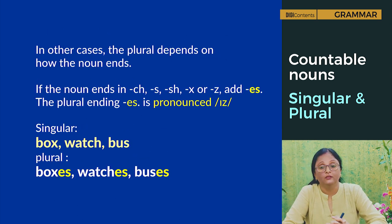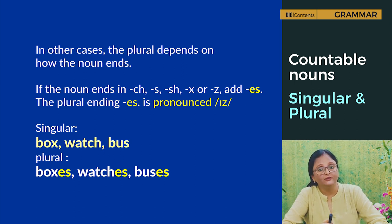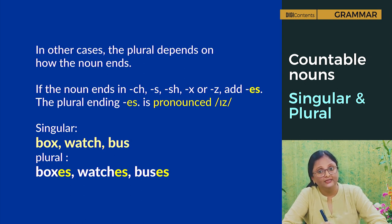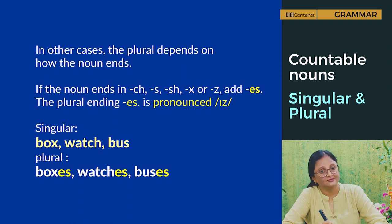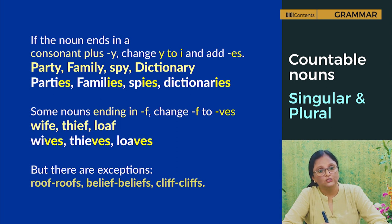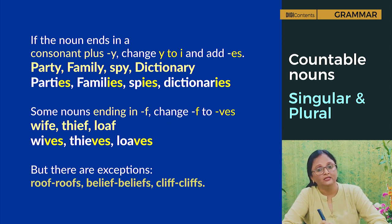In other cases, the plural depends on how the noun ends. If the noun ends in ch, s, sh, x, or z, add -es. The plural ending -es is pronounced as 'iz': box/boxes, watch/watches, bus/buses. If the noun ends in a consonant plus y, change y to i and add -es: party/parties, family/families, spy/spies, dictionary/dictionaries.